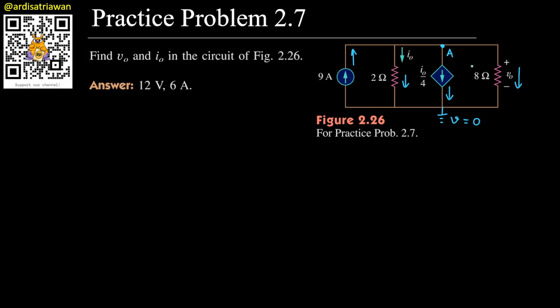Now let's do KCL at node A. What does KCL say? KCL says that the sum of the currents that goes in will equal to the sum of the currents that goes out.